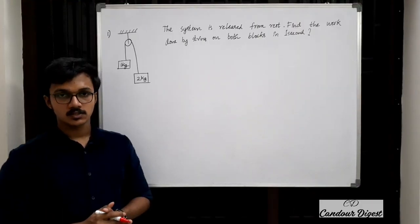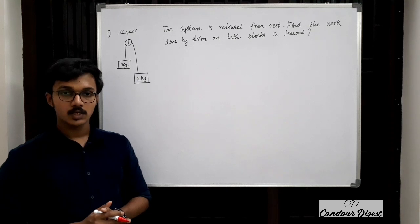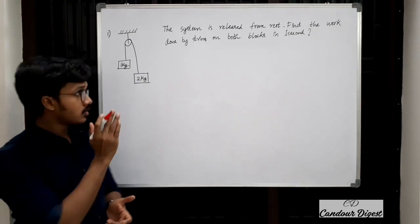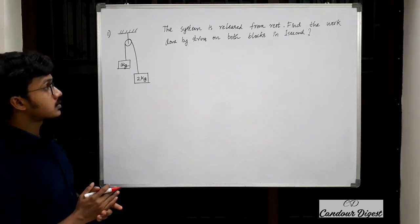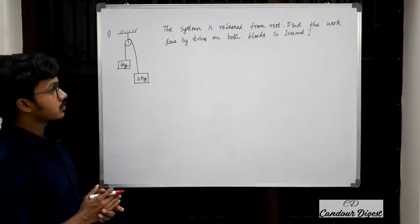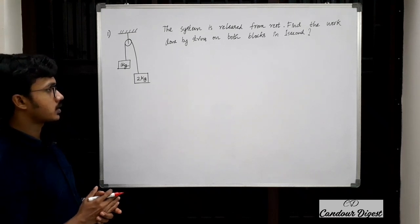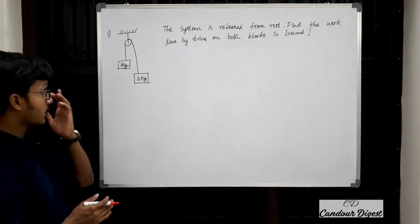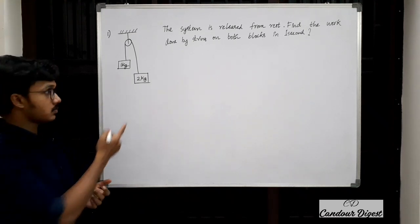Welcome back to Candidigest. Today we are going to solve some numericals from the chapter work, energy and power. The system is released from rest — find the work done by the string on both blocks in one second. Here we are given with a pulley block system.